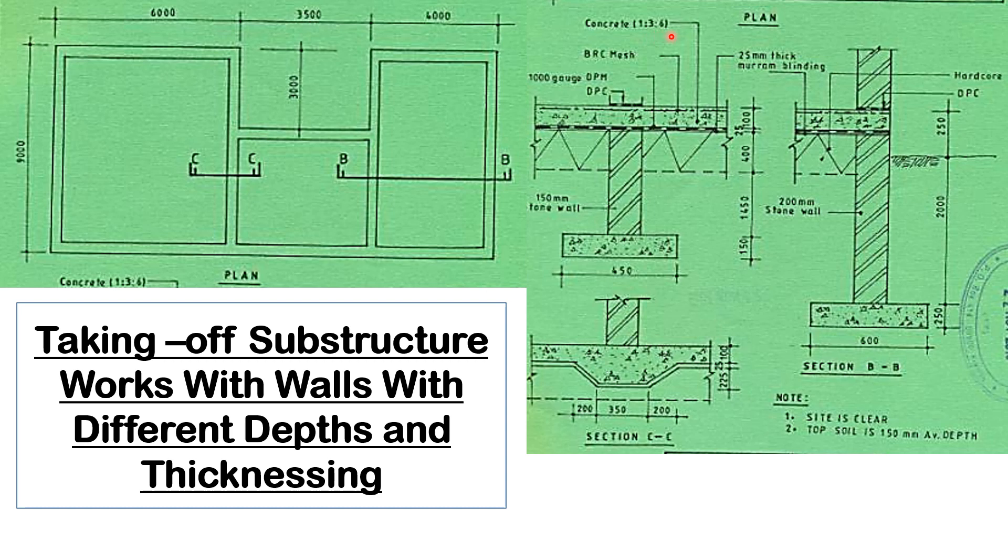DPC is on top of the concrete, BRC mesh is in the concrete. The concrete is ratio 1 is to 3 is to 6. This is 150 millimeters wall while this one is 200 millimeters stone wall. When we study the thickening here, we can see that this is 200, this is 350, and this is 200. Here it's 225, then we have madam blinding of 25, then the concrete of 100.